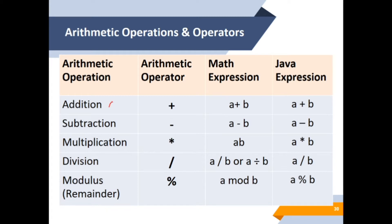In the addition operation, we use the plus sign. For the math expression, for example, we use A plus B, and for the Java expression, we also use the same A plus B. Next, for subtraction, the arithmetic operator uses the minus sign. The math expression is A minus B, and the Java expression is still the same: A minus B.